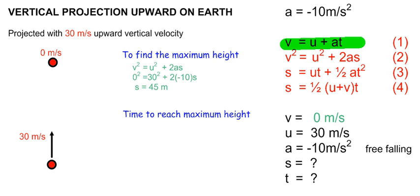To find the time it takes to reach maximum height, we can simply use equation 1. Substituting into equation 1 with the initial velocity to be 30 m per second, at maximum height to be 0 m per second, acceleration to be minus 10, we find the time it takes to get from projection point to maximum height to be equal to 3 seconds.